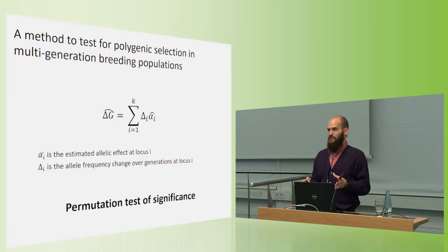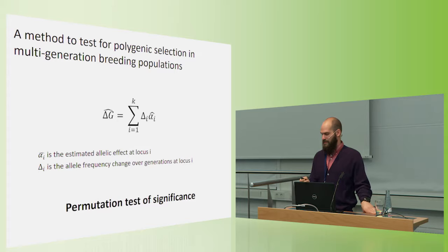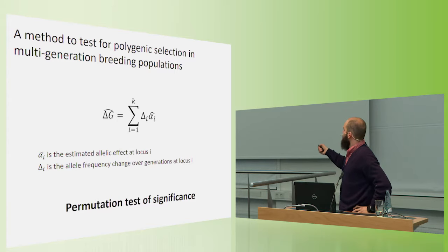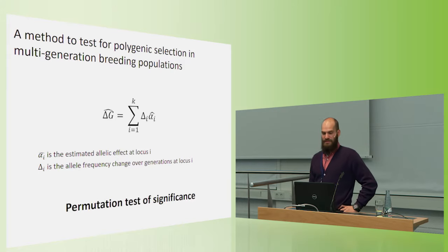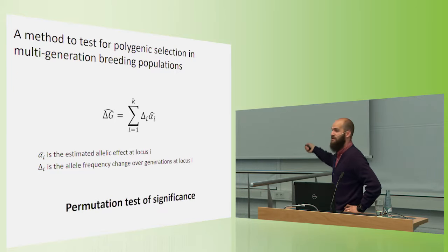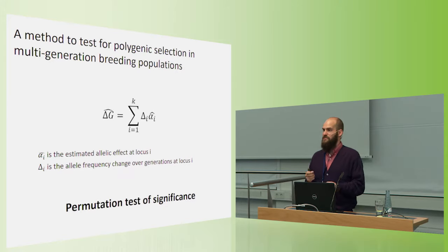We don't know exactly what every locus is doing. Is it good or is it bad? But on the whole, we're getting a reasonable estimate. And our allele frequency change estimates are actually pretty good, because we have genotype populations before and after selection. And then the nice thing about this statistic is it really facilitates developing a permutation test to identify is this significant. So here is a locus. If we just shuffle one of these values, so instead of doing a sum over all loci of delta times alpha, we do the sum over all loci of delta times a shuffled alpha, we can make a null distribution that assumes no selection because we've broken the relationship between allele frequency change and effect size.